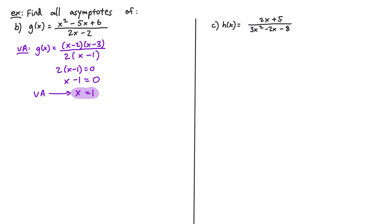Next, we need to decide whether our rational function has a horizontal asymptote or an oblique asymptote. In the numerator we have x squared — a degree 2 polynomial. In the denominator we have 2x — a degree 1 polynomial. Since the numerator has one higher degree than the denominator, we know that we have an oblique asymptote, and we'll need to perform polynomial long division to find it.